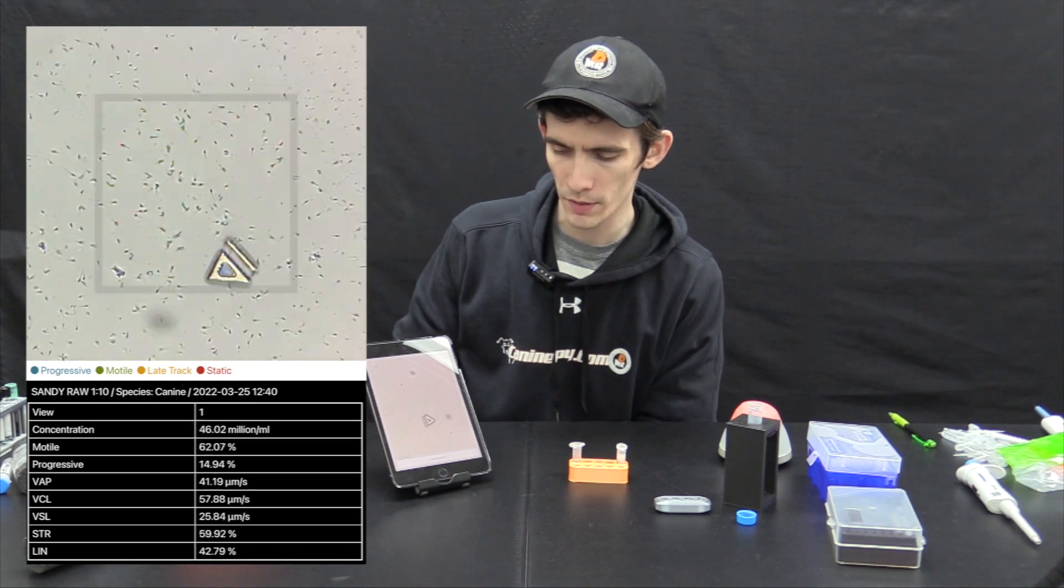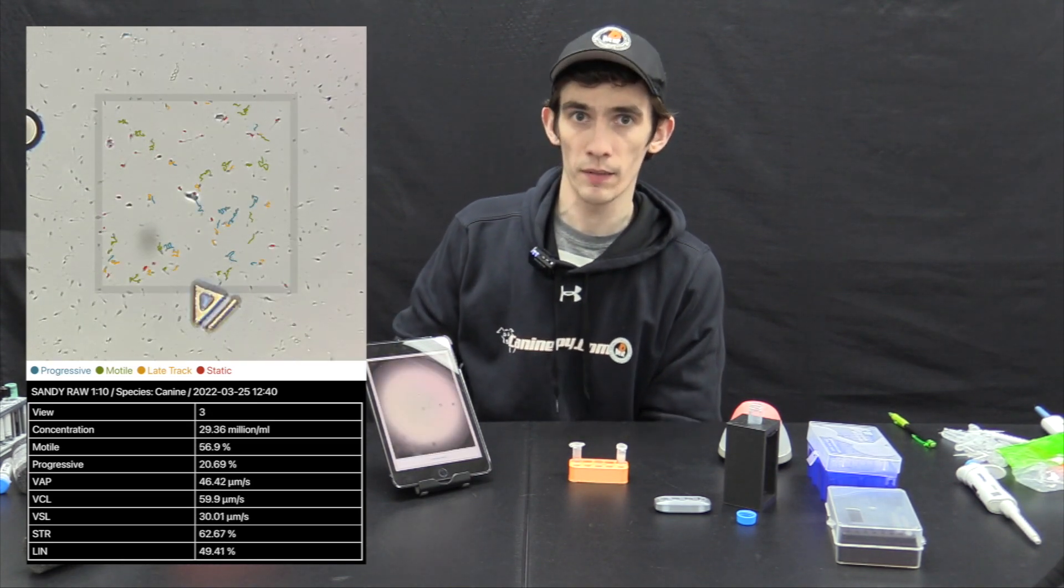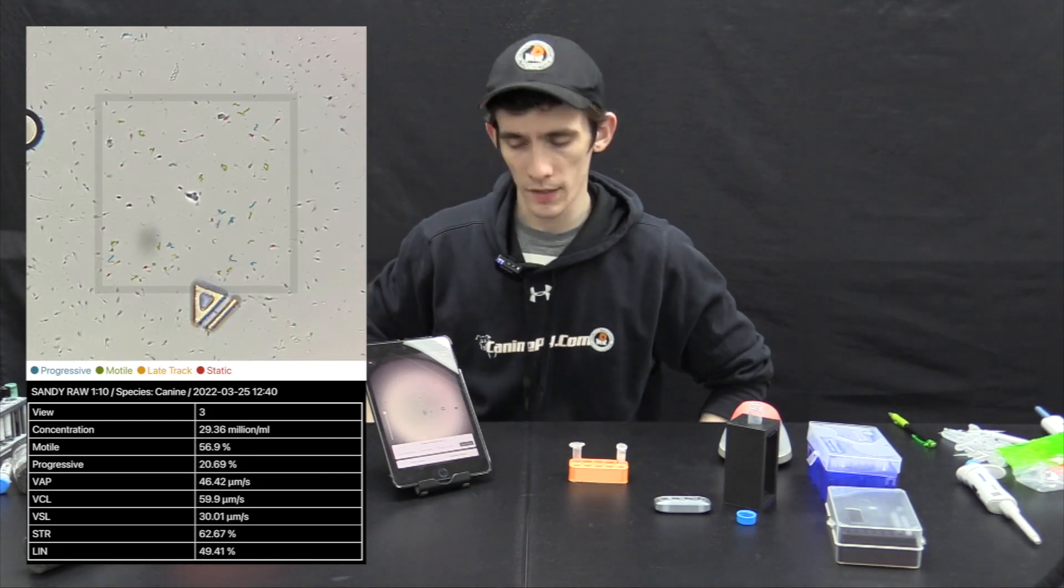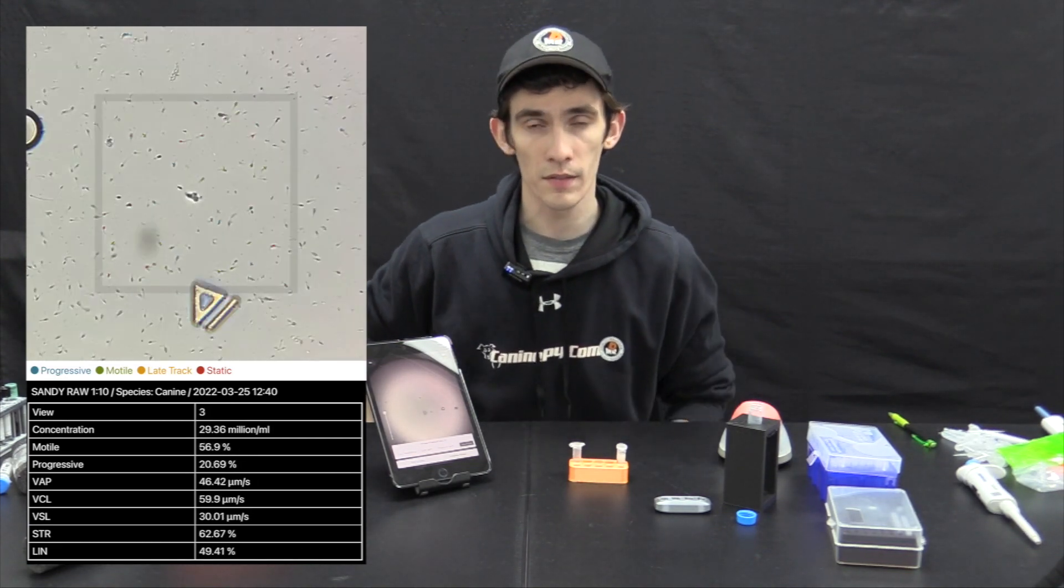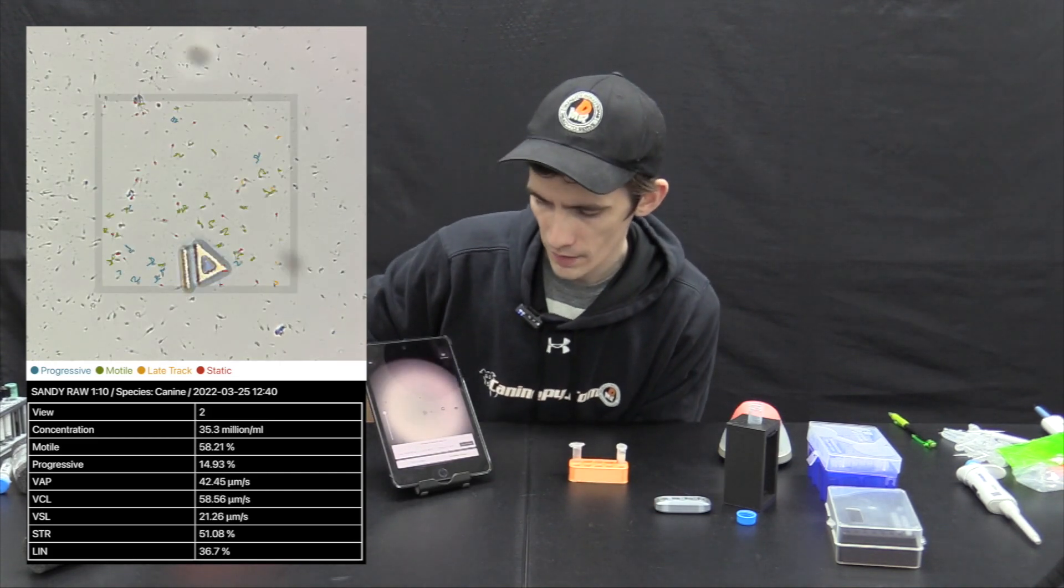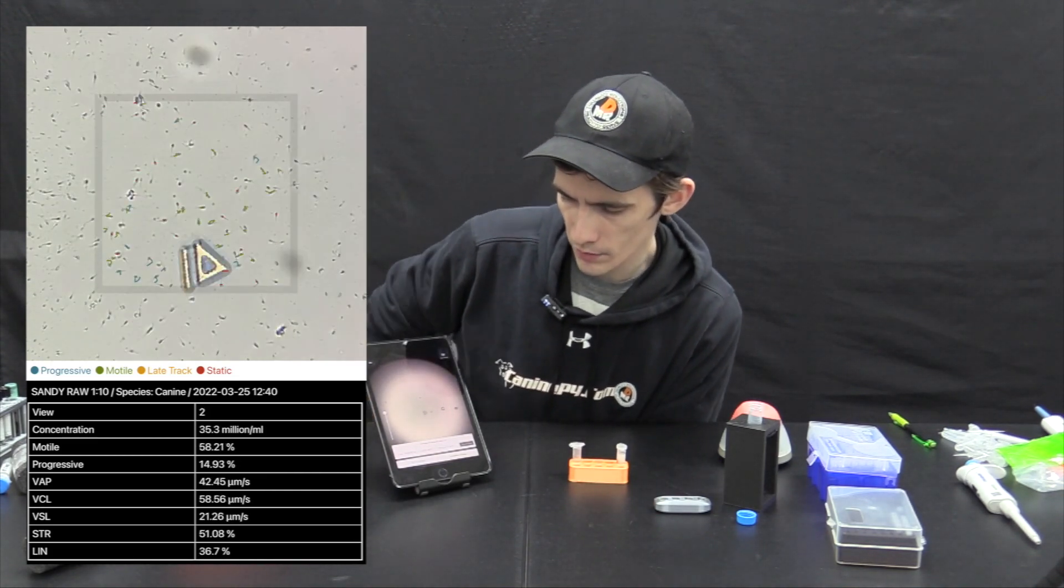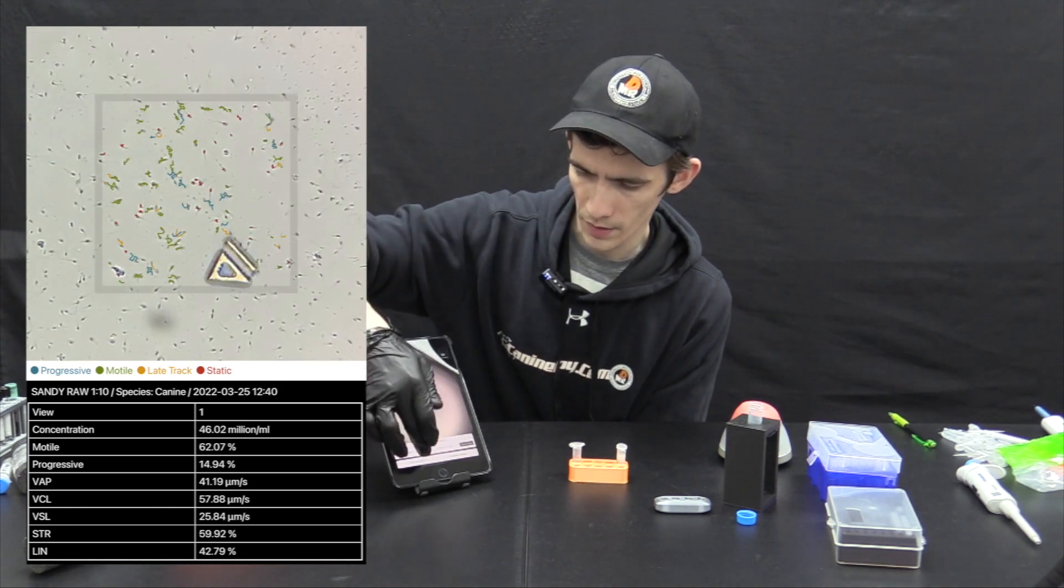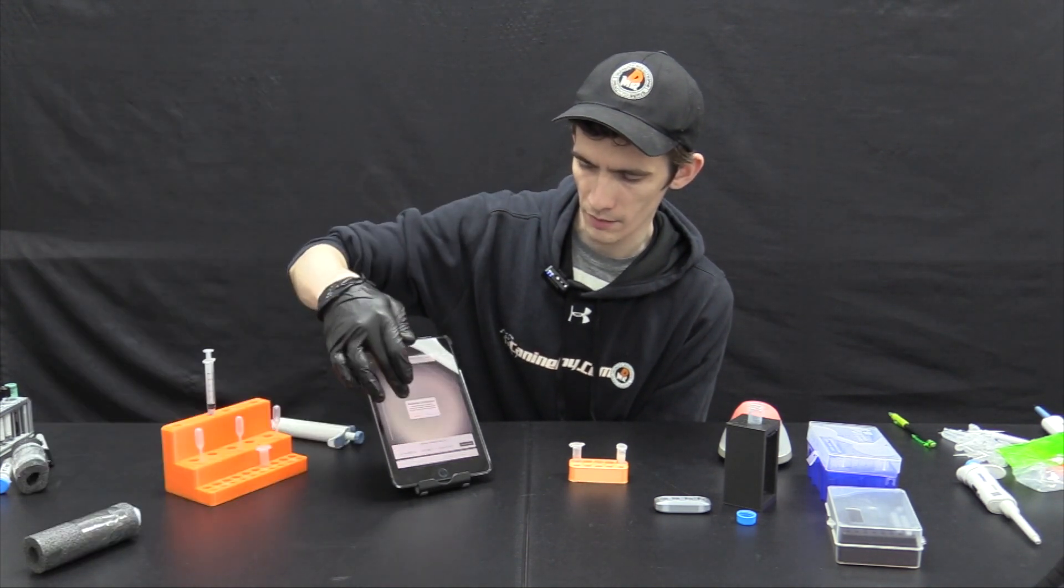At the 40 to 50 million per milliliter mark we have the sperms that are a lot better spaced out and the system can accurately track each one and get velocities as well as good motility and total motility. So here again we have a 60% motile and 14% progressive. We're going to do the analysis two more times to get the best average.